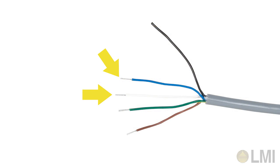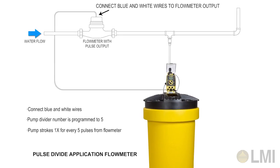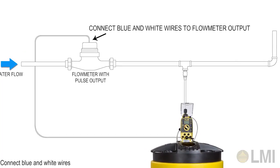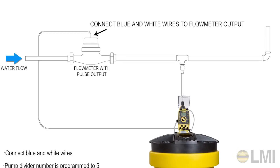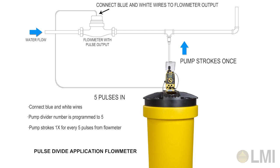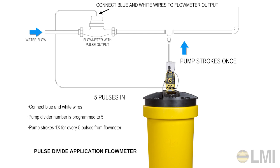Attach the input cable to the 5-pin connector. Your blue and white wires are your pulse input source. In this example illustration, the blue and white wires would be connected to an external source such as a flow meter. As water flow increases, the flow meter pulse output increases. With the pump divider number already programmed to 5, the pump will stroke one time for every 5 pulses received from the flow meter.